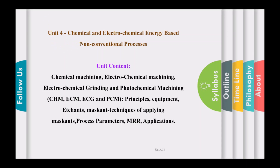Unit number four covers chemical and electrochemical energy based non-conventional machining processes. The contents include chemical machining (CHM), electrochemical machining (ECM), electrochemical grinding (ECG), and photochemical machining (PCM). For all four processes we will learn working principles, equipment used, etchants, different masking and scribing techniques, process parameters, material removal rate, and applications.